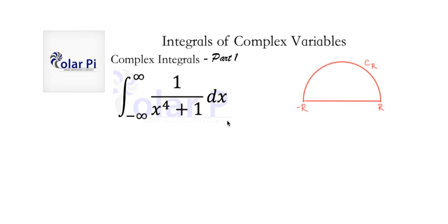If I skip any details here and you're not happy with that, I'll link that video below so that you can fill in the details by watching that other video. Let's get started. To start, as I explained in that other video, we can rewrite our integral to be the integral from negative infinity to infinity of 1 over z to the fourth plus 1 dz.